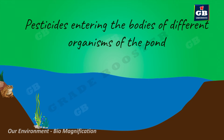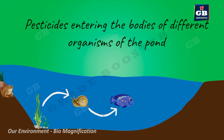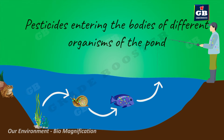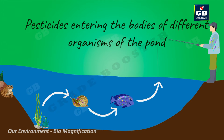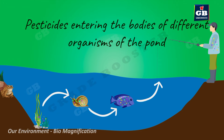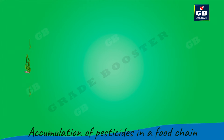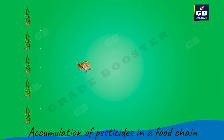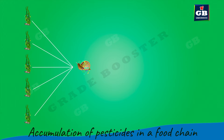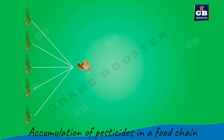If a pond is contaminated by pesticides and insecticides, they enter the bodies of aquatic plants present in that pond. The amount of pesticide residues increases if we go up in a food chain. Let us see how it happens. From the same pond, a snail may eat many such polluted plants in its lifetime. So these poisonous chemicals enter the body of the snail. The amount of chemical deposits in the snail is obviously higher than the chemical deposits in each aquatic plant.